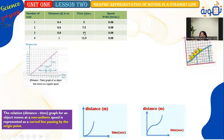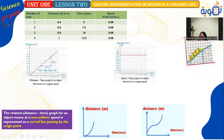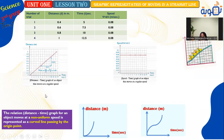To represent uniform speed on a speed-time graph, the time is on the x-axis and speed on the y-axis — it is a straight line parallel to the time axis, because speed is constant as time passes. For an object moving at non-uniform speed, the distance-time graph is a curved line passing through the origin.